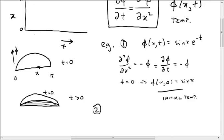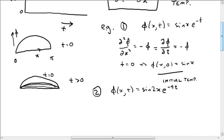So our second example is going to be what happens to sine of 2x. Well, when we differentiate this twice with respect to x, we're going to get a minus 4 multiplying everything. And if we want to compensate for that by differentiating with respect to t once, we're going to need an e to the minus 4t. So you can check d² this by dx² equals minus 4 phi, and that's the same as d phi by dt.